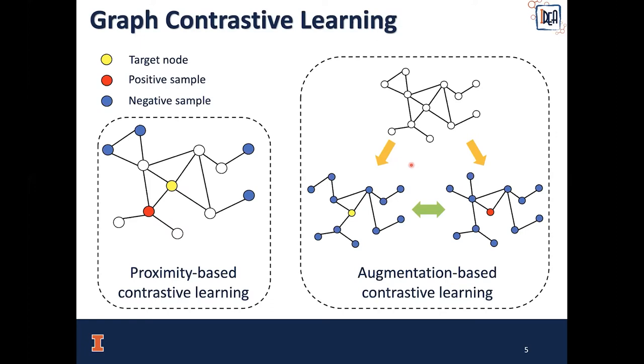The key idea of Graph Contrastive Learning is to maximize the similarity among positive samples against negative samples. Recently, augmentation-based contrastive learning methods are proposed, which are more powerful and simple to implement. For this method, we first generate two views using data augmentations from the original graph, and the corresponding nodes in two views are treated as positive samples, while all other pairs are treated as negative samples.